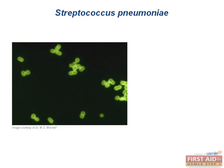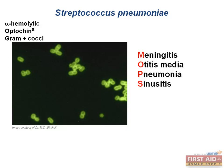Strep pneumoniae is our alpha-hemolytic, gram-positive diplococci that is optochin-sensitive. Its capsule is one of its virulence factors — if it loses the capsule, it will not be as virulent. MOPS is a useful mnemonic for remembering the types of infections Strep pneumoniae causes: Meningitis, Otitis media, Pneumonia, and Sinusitis.